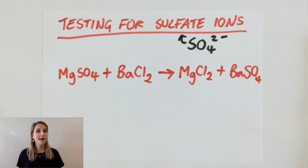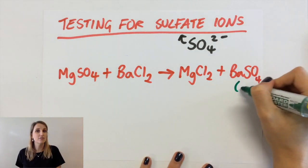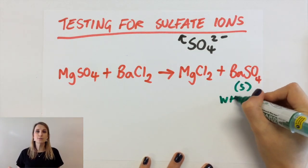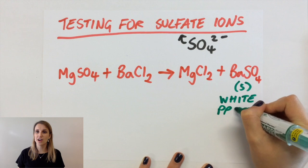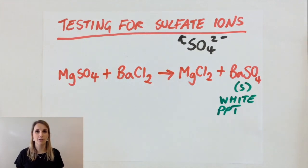Now remember if you're trying to work out which of the products is the one that's the precipitate, it's always the one that contains the ion that you're actually testing for. So in this case I'm testing for a sulfate, so therefore the white precipitate, the solid product, has to be the barium sulfate.